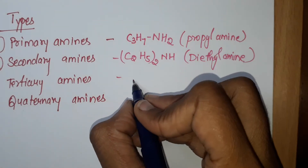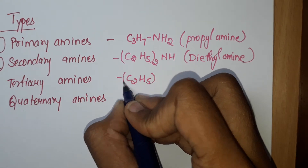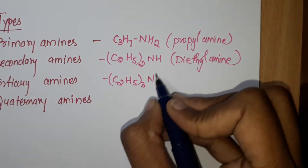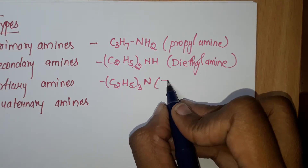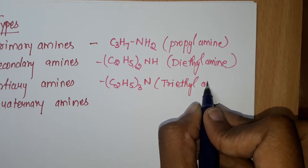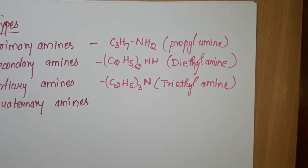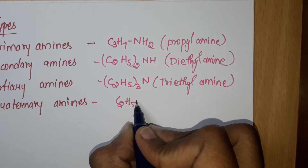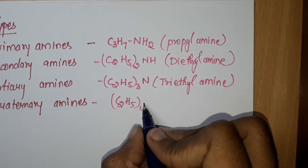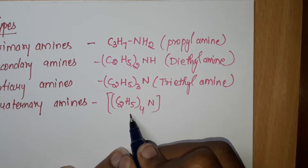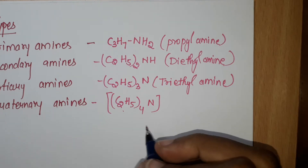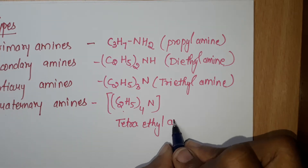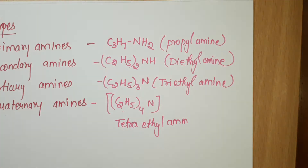For tertiary amine, the example is (C2H5)3-N — meaning three molecules of C2H5 and N. The name of this compound is triethyl amine. Now the example for quaternary amine is (C2H5)4 — meaning four molecules of C2H5. This is tetraethyl amine.